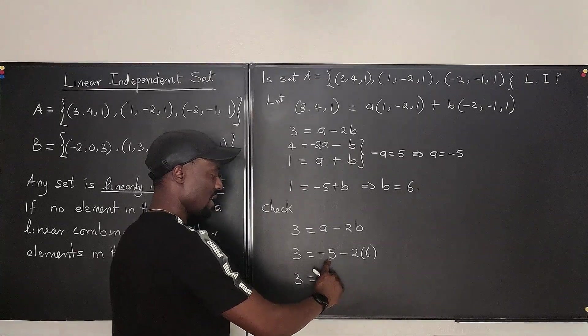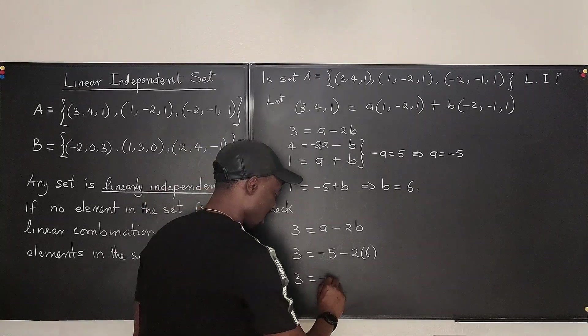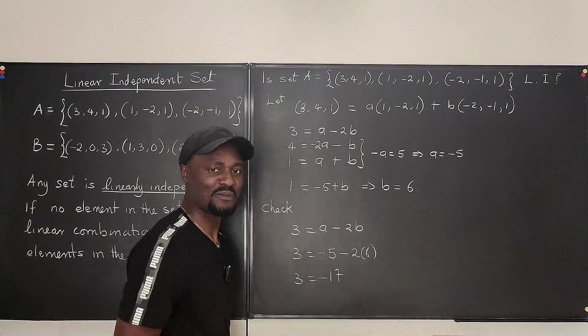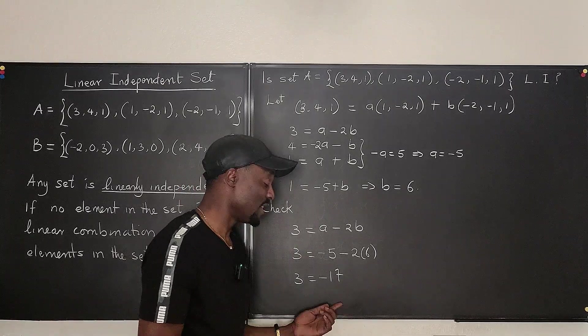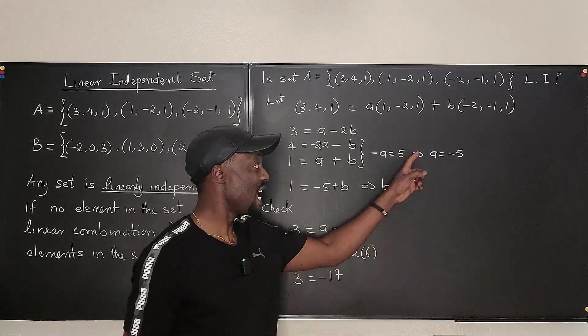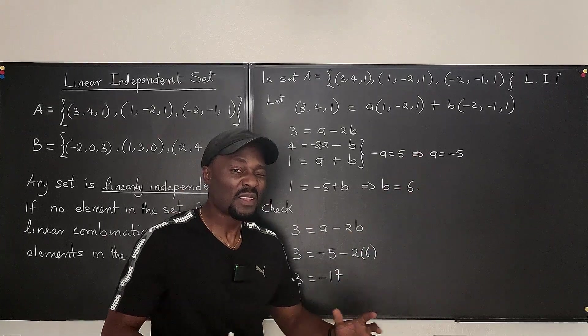This doesn't look right. This is 12 and this is 5. That's 17. Negative 17. This doesn't make any sense. 3 can never be equal to negative 17. So the A and B that we computed do not exist.